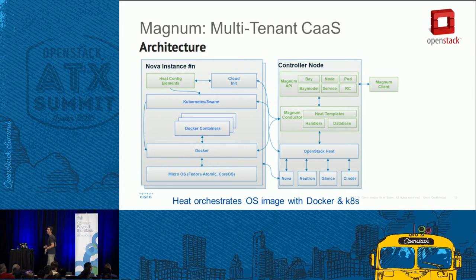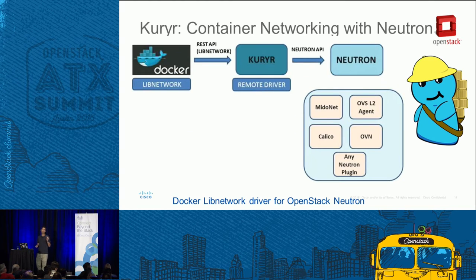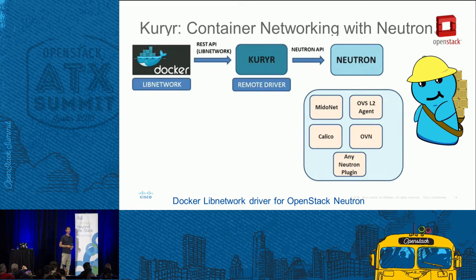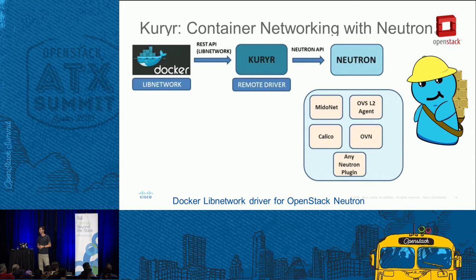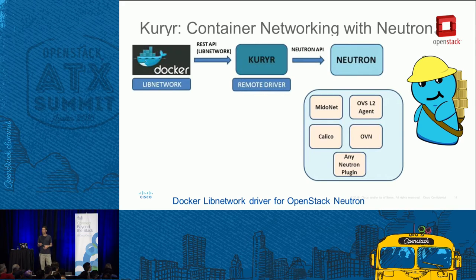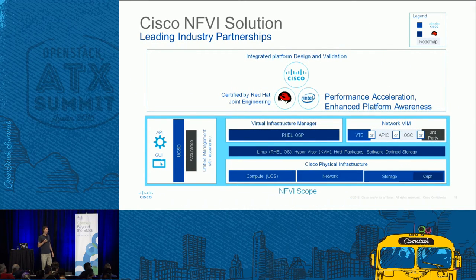There are also interesting things happening in the Kuryr project, which maps Docker lib-network and converts it into Neutron APIs. This lets you network your containers just like your VMs within OpenStack, and you can use all the Neutron plugins including the OVS layer-2 plugins as well as the Calico plugin.